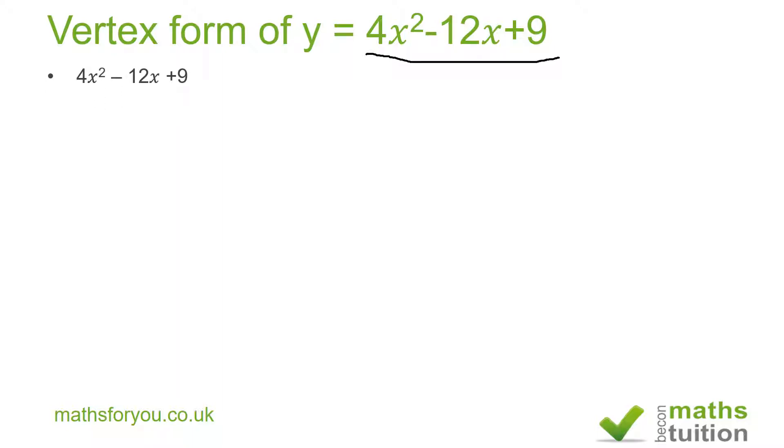Then I divide every term by 4, so now I have 4 into x² - 3x + 9/4. Now you need to make sure that you've got the correct pairs of parentheses or brackets there.